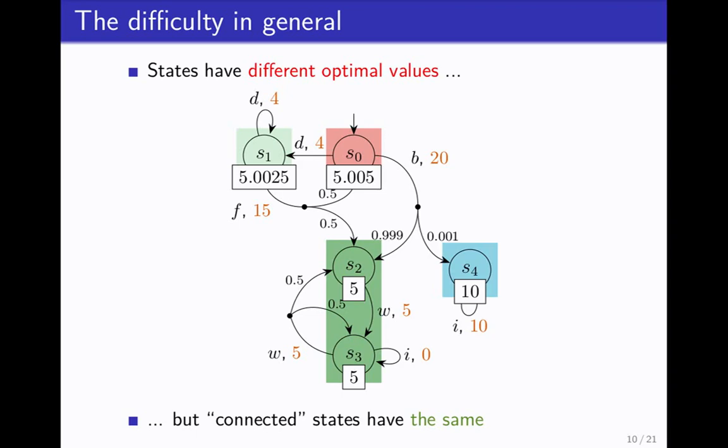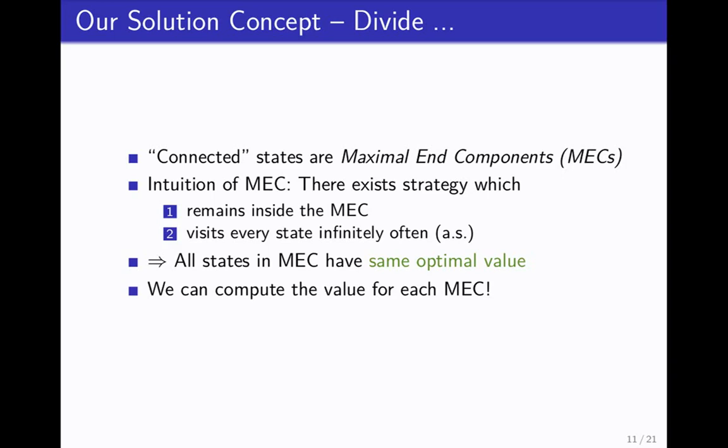But the thing you can observe is that states that are kind of connected have the same optimal value. These two guys here have the same optimal value. Why is this the case? This is basically the key concept to the solution. These connected states are actually just MECs. MECs are parts of the state space in which you can remain infinitely for infinite time if you decide to do so in a nutshell. All the states in the MECs have the same optimal value. Because suppose that some state has some optimal value. Then by definition of a MEC you can just go there in finite time, almost surely, and then do whatever needs to be done to get the optimal value there.